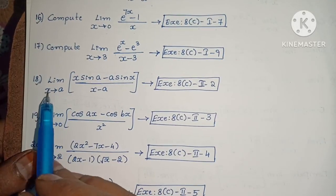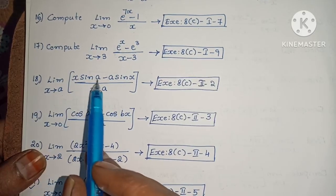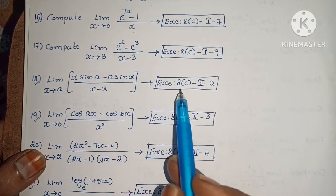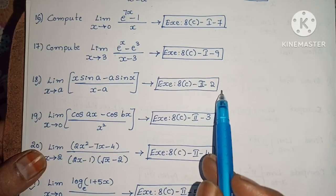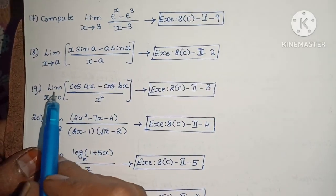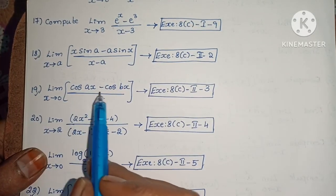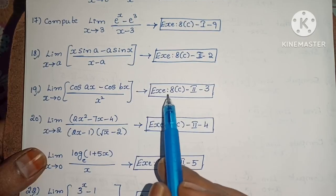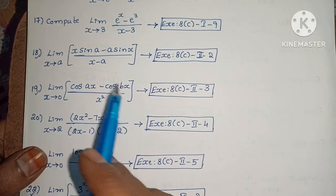Next: Limit extends to a of x sin of a minus a sin x by x minus a. Exercise 8c, second roman law, second one. Next: Limit extends to 0 of cos ax minus cos bx by x squared. Exercise 8c, second roman law, third one.